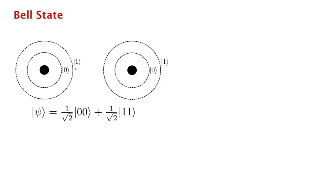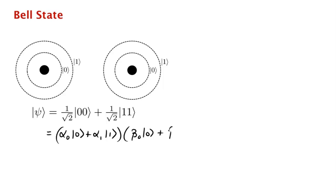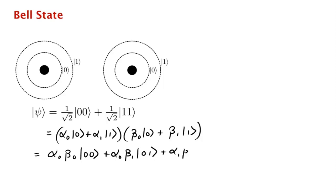Here's a very simple state: it's an equal superposition of |00⟩ and |11⟩. With amplitude 1/√2 the two qubits are in state |00⟩, meaning both are in the ground state, and with amplitude 1/√2 both are in the excited state. Let's assume you could write this as (alpha_0|0⟩ + alpha_1|1⟩)(beta_0|0⟩ + beta_1|1⟩). Expanding, we get alpha_0 beta_0 |00⟩ + alpha_0 beta_1 |01⟩ + alpha_1 beta_0 |10⟩ + alpha_1 beta_1 |11⟩.